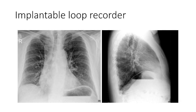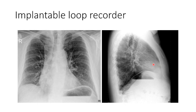The next cardiac device is the implantable loop recorder. These are small insertable devices that continuously monitor and record cardiac rhythms. On the AP view you can see it, and on the lateral view you can see it subcutaneously. They are placed subcutaneously and used for the evaluation of patients with recurrent unexplained episodes of palpitations and syncope.